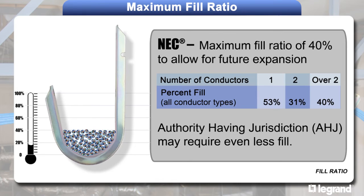NEC recommends a maximum fill ratio of 40% of the total capacity of the hook. This allows for future modifications and expansion.